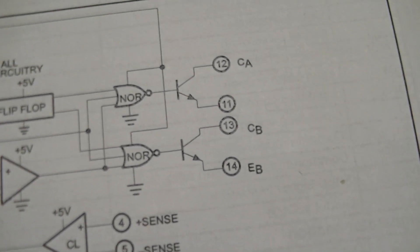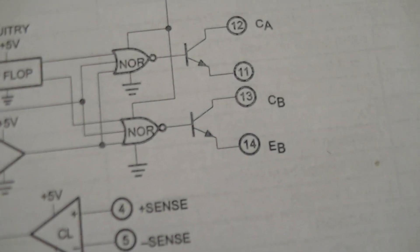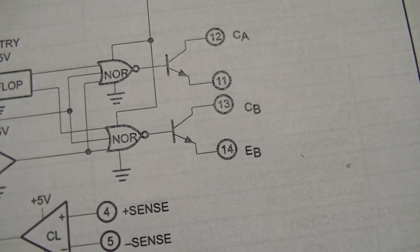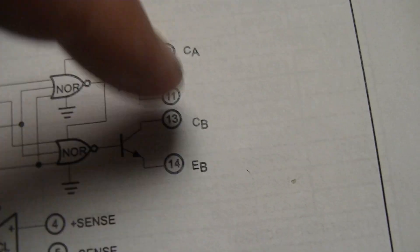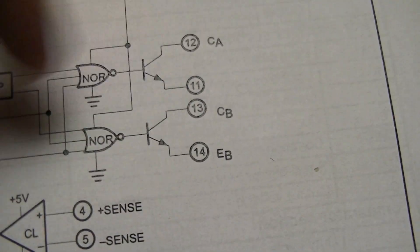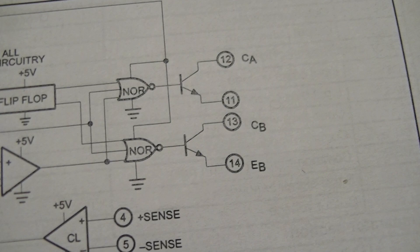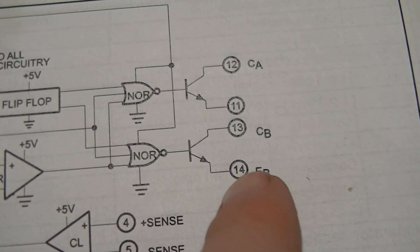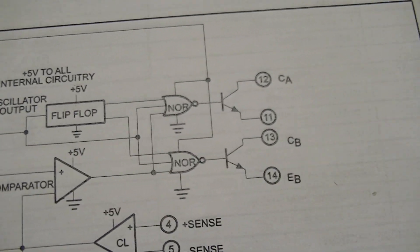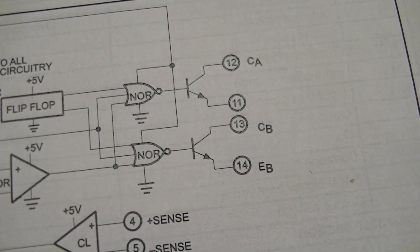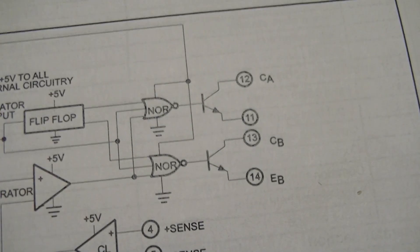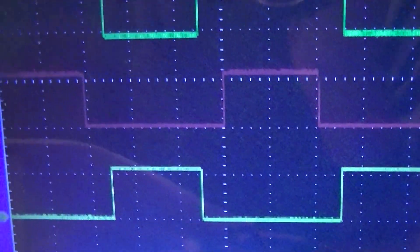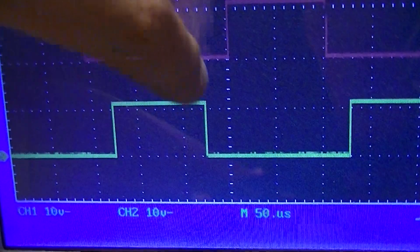The way I have this configured is that the outputs are being used as an open emitter where pin 12 and pin 13, which are the collectors of each transistor, are tied to a local 12 volt hot, and the emitters are tied to ground through a pair of 4700 ohm resistors. The waveforms on the oscilloscope are just the potentials at the emitters of the two transistors.